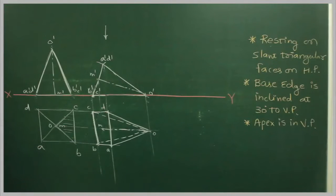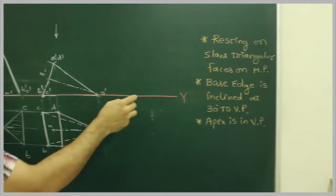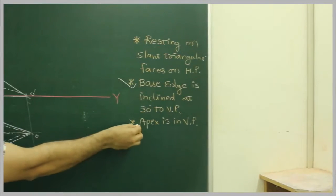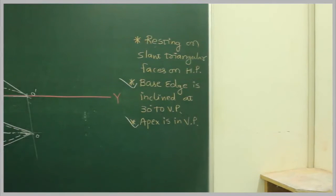But we need to satisfy one more condition. That is Apex is in VP. Now if you see, in the last stage, we have two information. First one is base edge, see this. The second one is Apex is in VP. So what we will do?